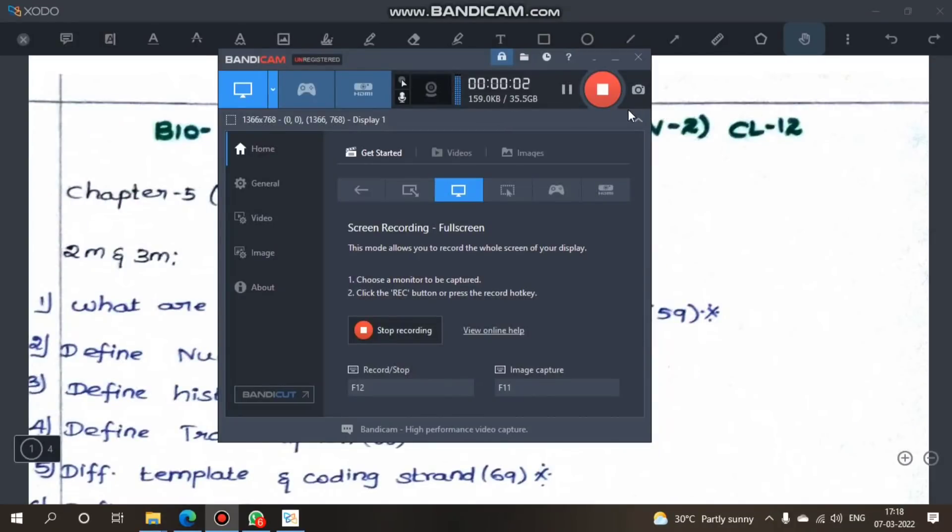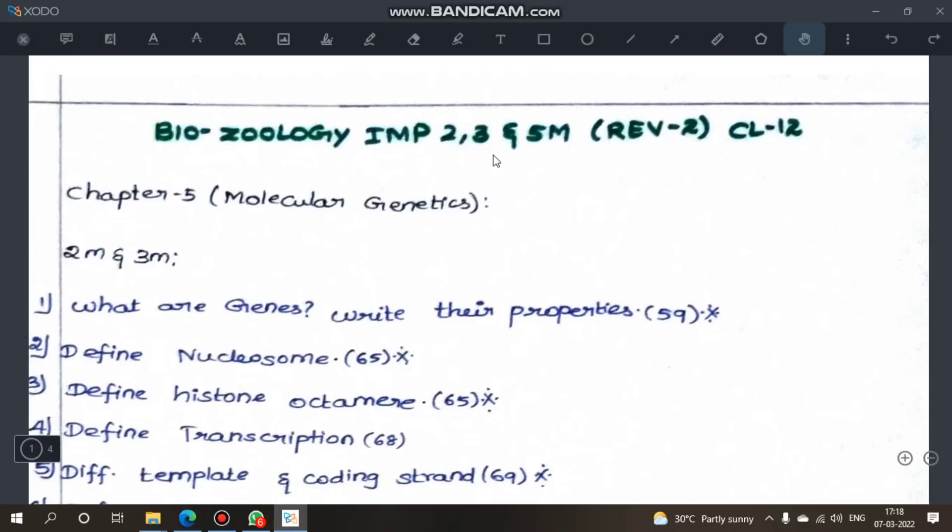Hi everyone, in this video I will talk about Biology important two marks, three marks, and five marks questions. One video covers two marks, three marks, and five marks for all the chapters. The chapters are 5, 6, 7, 8, and 9. In the fifth chapter, you will get important two marks, three marks, and five marks.